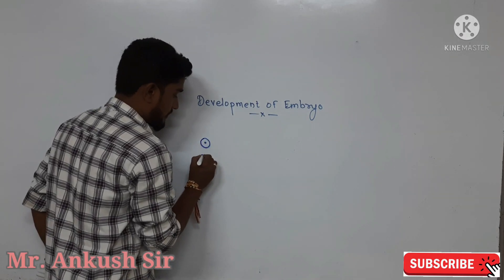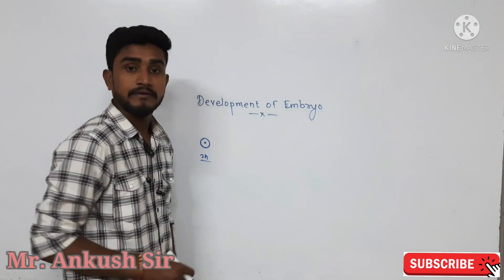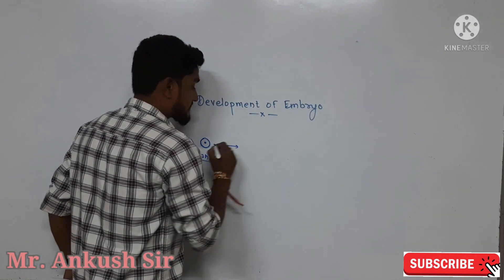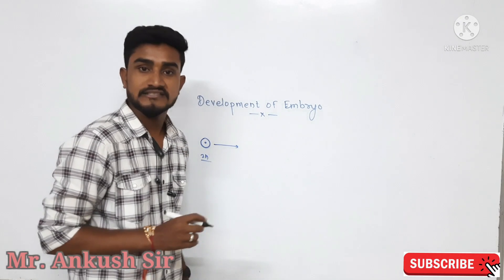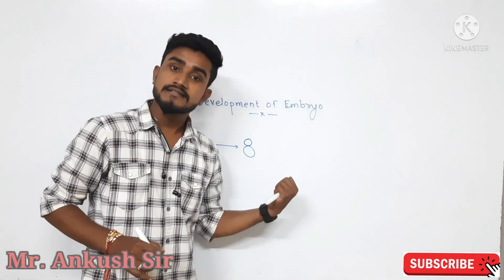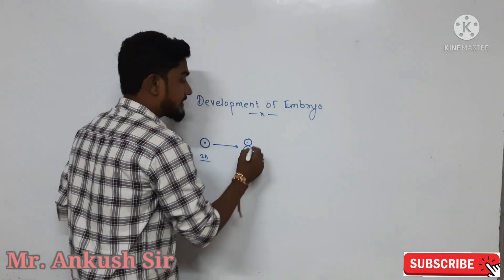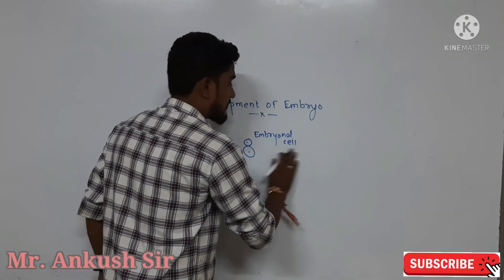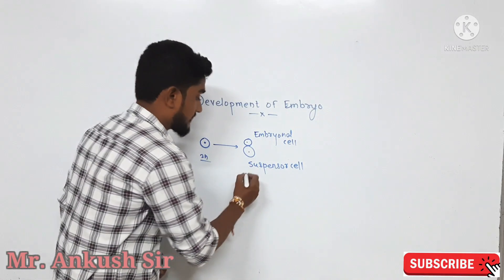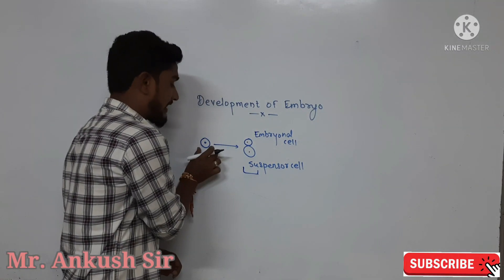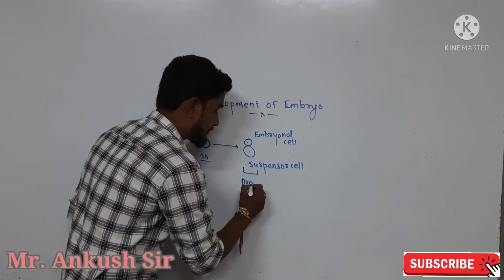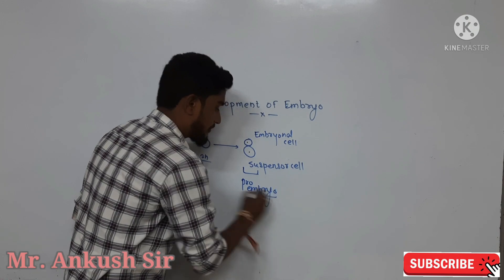This is the zygote cell. The zygote is the male-female fused cell. The haploid fused cell is the diploid. This undergoes unequal division — the embryo divides into two unequal parts: one is small and one is large. That is why we say it is an unequal division. The embryo cell leads to the main embryo structure.